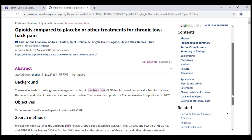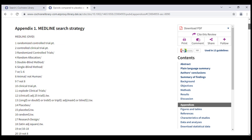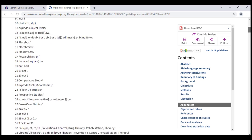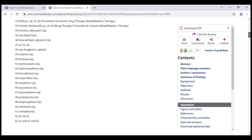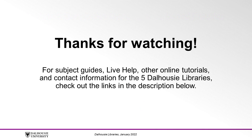To see the exact search strategy that was used for a Cochrane review, click Appendices. You can also look at the other options in this menu, and each Cochrane review is structured in the same way. This module concludes our five-part series on evidence-based practice. If you would like to learn more about searching in support of evidence-based practice, you can check out our other videos in the description below. Thanks for watching.